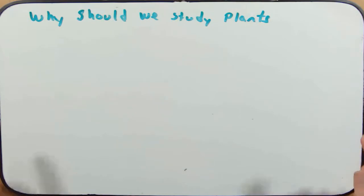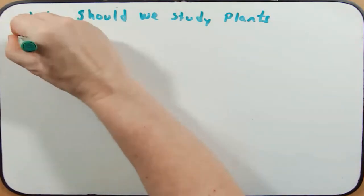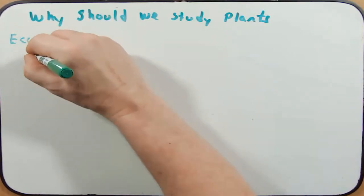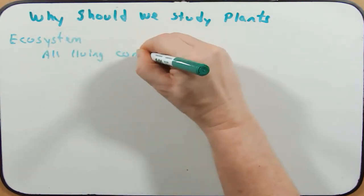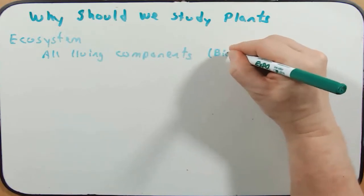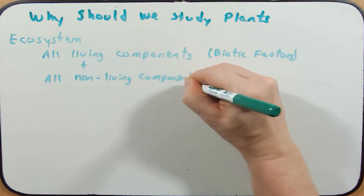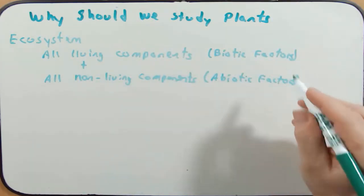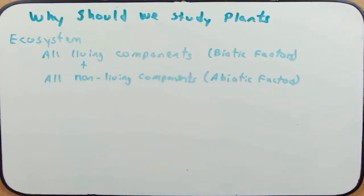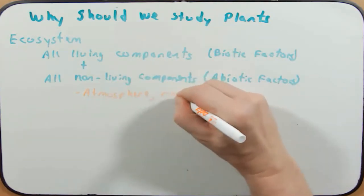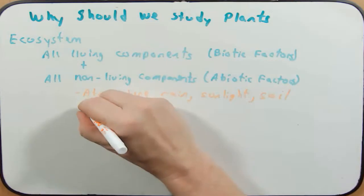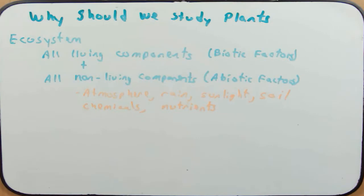Let's begin with why we should study plants. First, I want to define a couple of terms. An ecosystem includes all living components — called biotic factors — plus all non-living components in an area, called abiotic factors. Biotic factors include anything alive: bacterial, archaeal, or eukaryotic species. Abiotic factors — the non-living components — include things like the atmosphere, rain, sunlight, soil, chemicals, and nutrients.